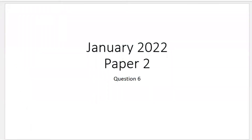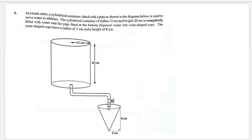Welcome back to another video. Today we're working on January 2022 Paper 2, Question 6. At a truck meet, a cylindrical container fitted with a pipe is used to serve water to athletes. The cylindrical container has a radius of 12 centimeters and a height of 20 centimeters and is completely filled with water.